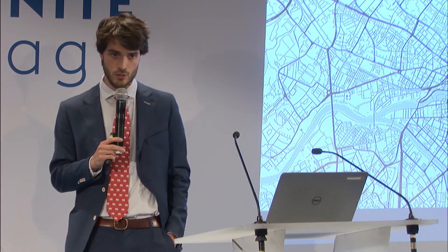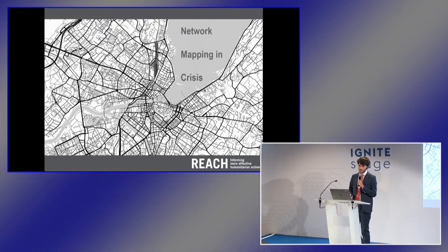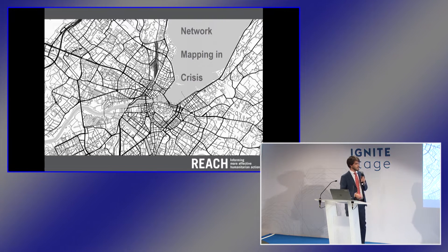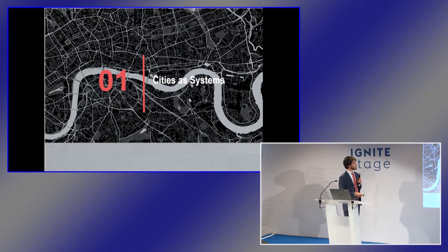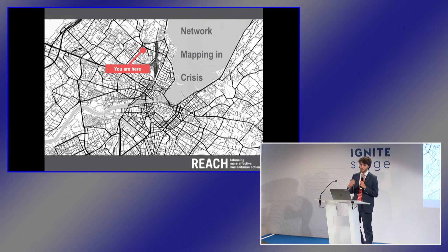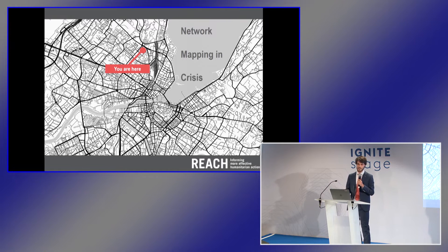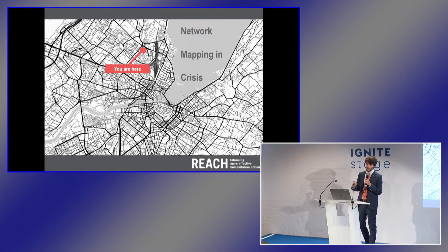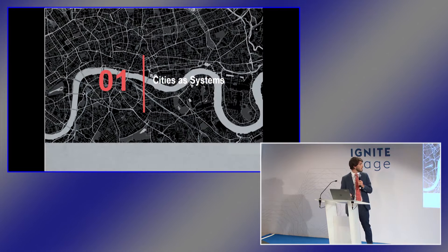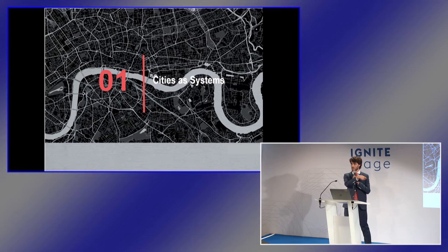For those who don't know, REACH is an initiative of IMPACT, ACTED, and UNOSAT, and we support assessment, information management, and mapping in more than 20 crisis-affected countries. The map behind me represents Geneva — you are here. What I quite enjoy about these black and white maps is that they elegantly show how human societies have decided to organize their living environments. The thing I want to talk about today are cities, and more specifically, cities as systems.